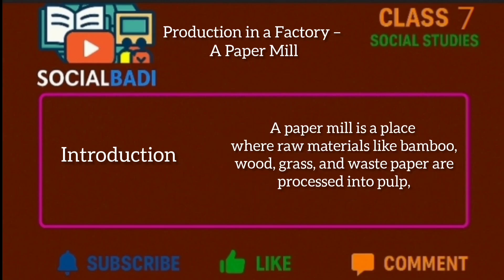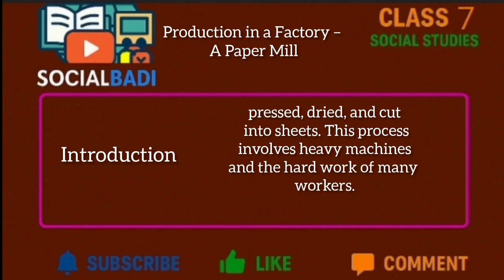A paper mill is a place where raw materials like bamboo, wood, grass and waste paper are processed into pulp, pressed, dried and cut into sheets. This process involves heavy machines and the hard work of many workers.